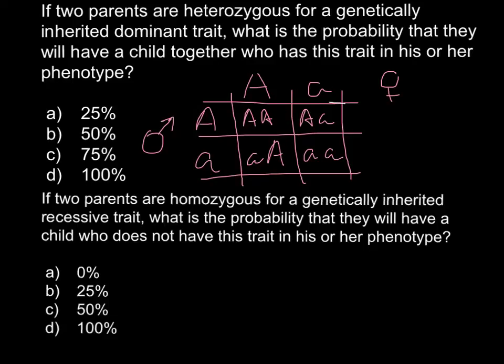So as you see, 75% or three out of four would have one capital A, or in one case this is going to be homozygous for this trait capital A, and two heterozygous for this trait. So together, 75% would have this trait. So the correct answer is C.